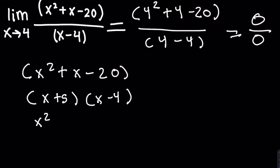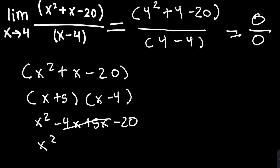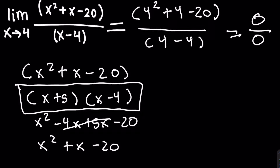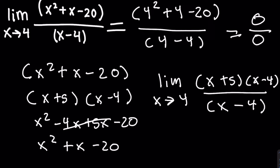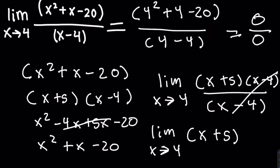We can check this: x times x is x squared, x times minus 4 is minus 4x, 5 times x is plus 5x, and minus 4 times 5 is minus 20. The minus 4x and plus 5x simplify to x, giving us x squared plus x minus 20. So we rewrite our limit as the limit as x approaches 4 of (x plus 5)(x minus 4) over x minus 4. The x minus 4 terms cancel, leaving the limit as x approaches 4 of x plus 5. Plugging in 4 gives 4 plus 5, which equals 9. So the answer is 9.